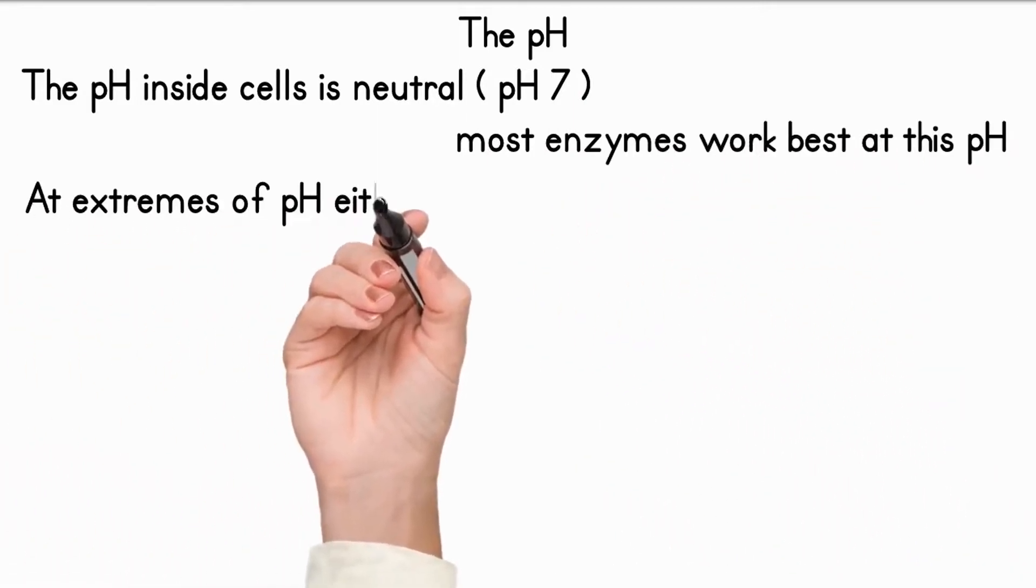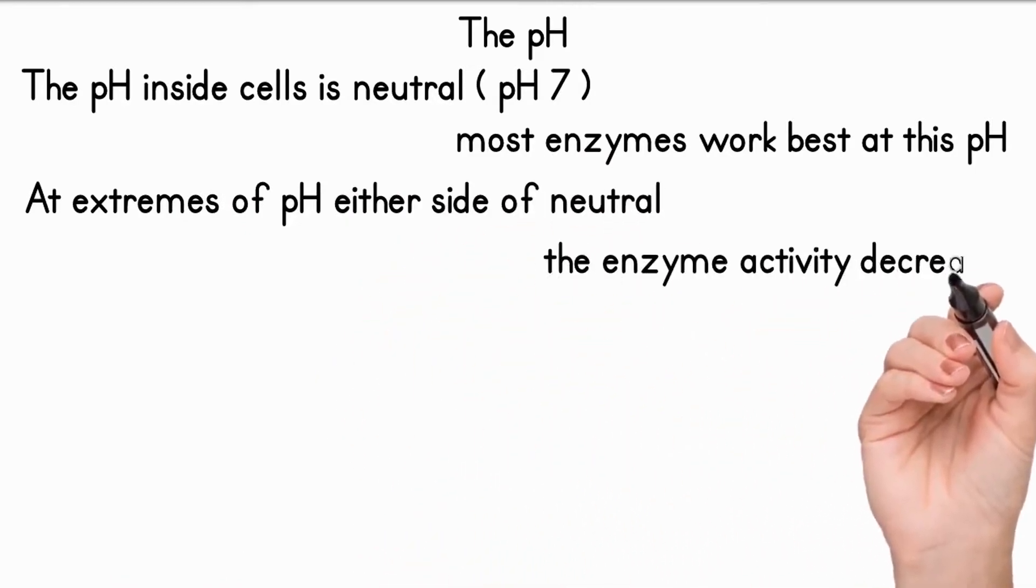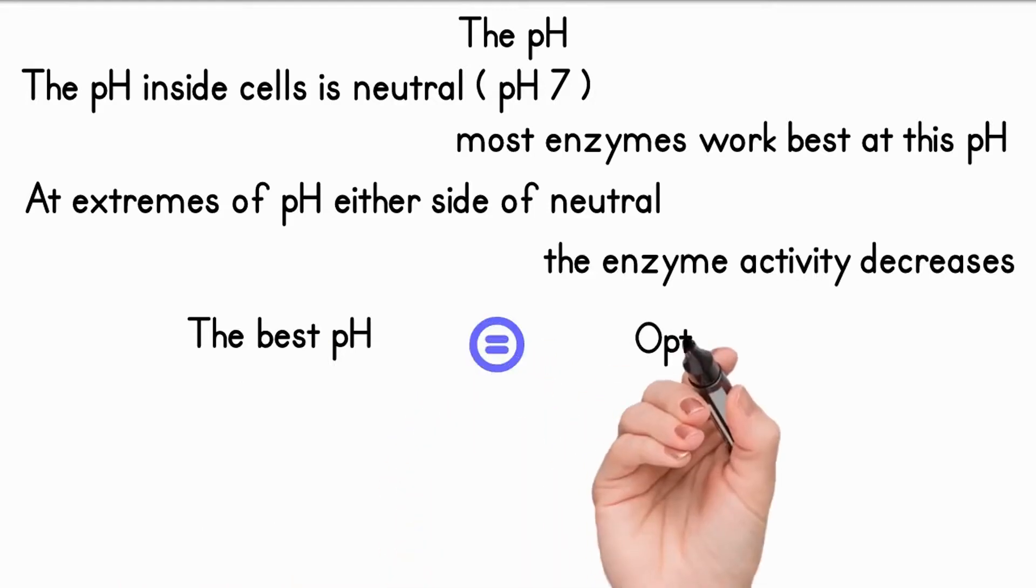At extremes of pH, either side of neutral, the enzyme activity decreases. The pH at which the enzyme works best is called its optimum pH.